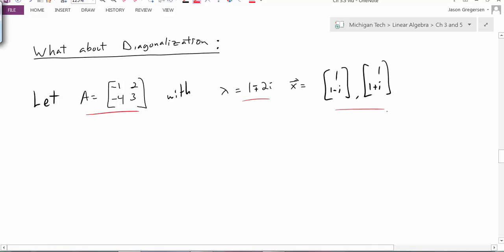Now if we were just following the rules of our diagonalization, we would simply look for A equal to P times D times P inverse. Now, this certainly doesn't look like a very friendly diagonalization, and actually it's just not what we want to do.